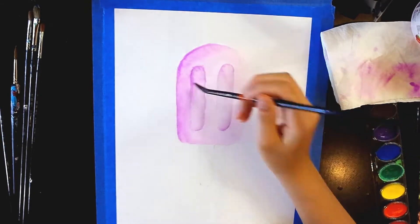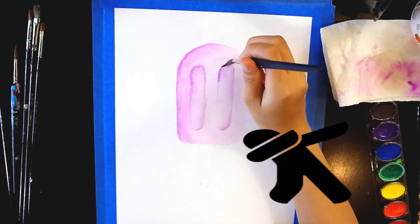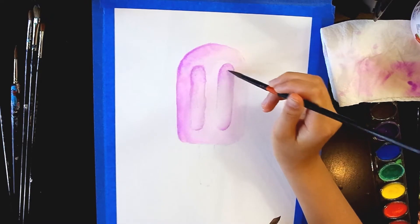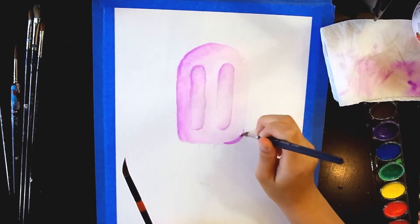Continue to add shadows. As you can see, I'm dabbing the color to create a gradient effect from dark to light. Use short brushstrokes to blend the color.